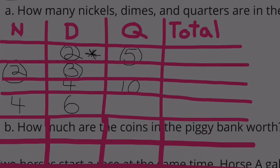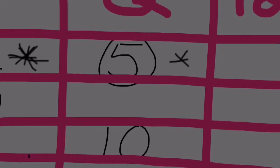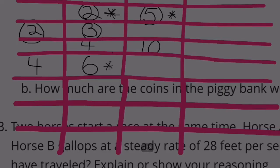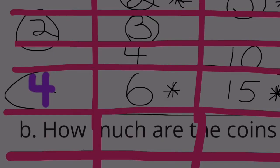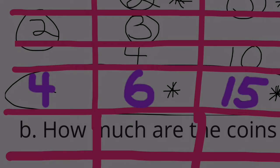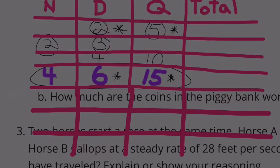2 dimes. If we multiply that by 3, we would get 6, as we have right here. So let's multiply the amount of quarters by 3, so we keep the same ratio. 5 quarters times 3 would be 15. Now we know how many nickels, dimes, and quarters we have in this row. When we have 4 nickels, we have 6 dimes and 15 quarters, for a total of 25.